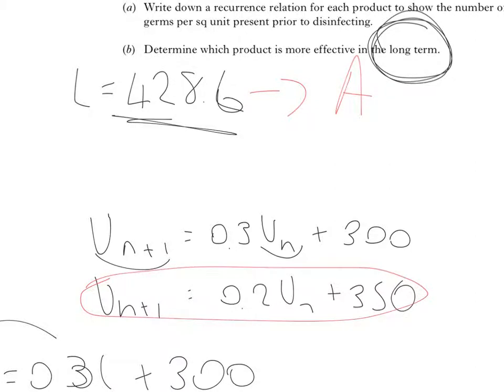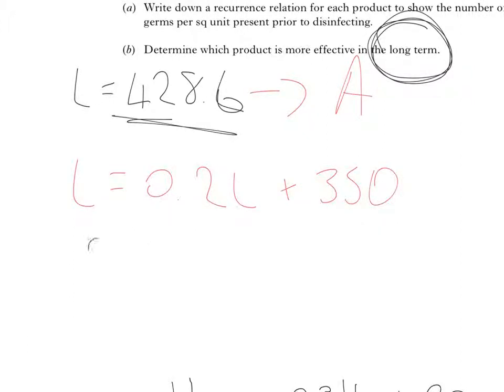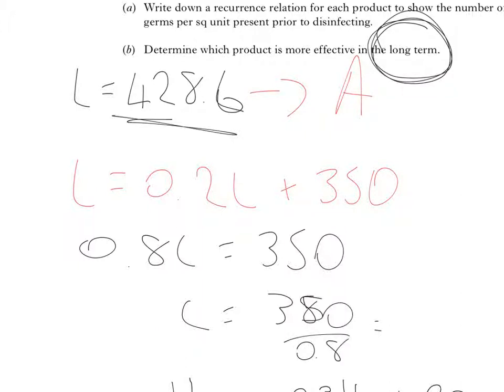Product B is given by that recurrence relation, so again, that will be L equals 0.2L plus 350. So, bringing that across, and that will be 0.8L equals 350. L equals 350 divided by 0.8, and that will give me 437.5.